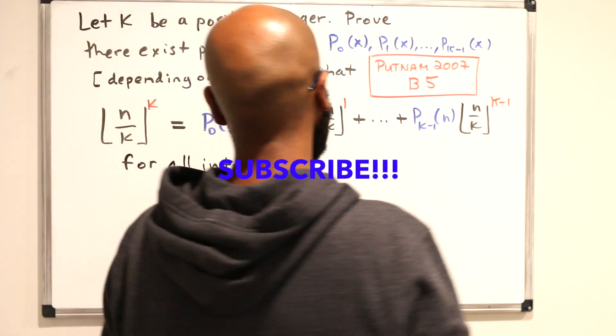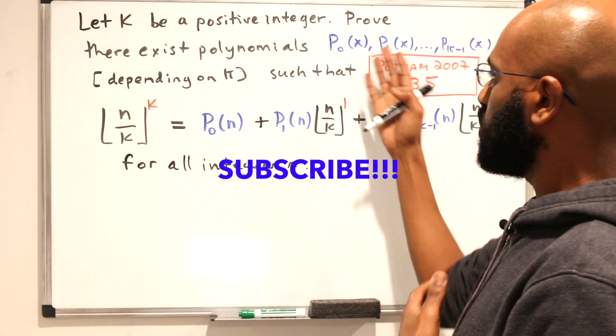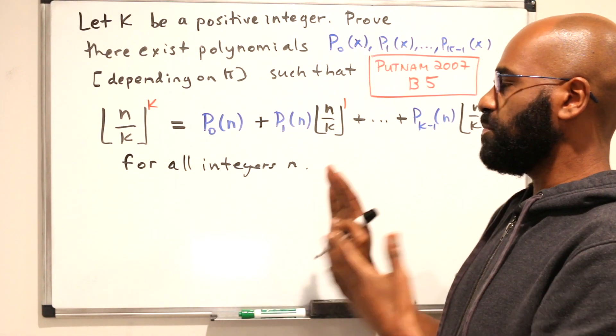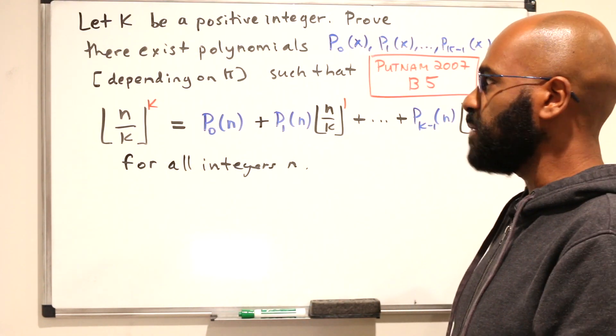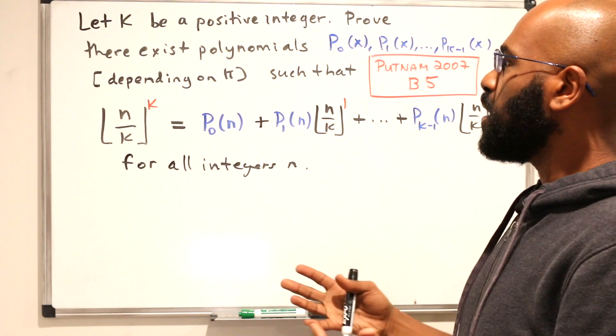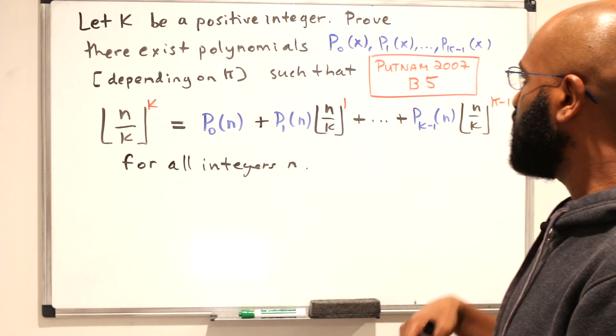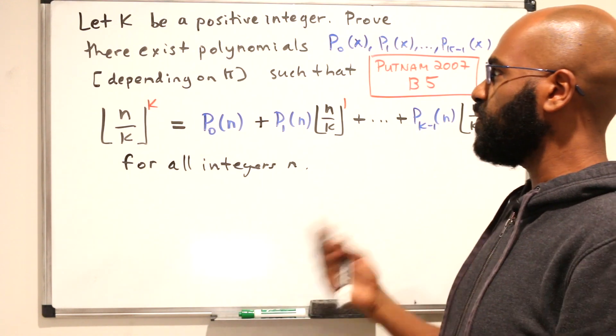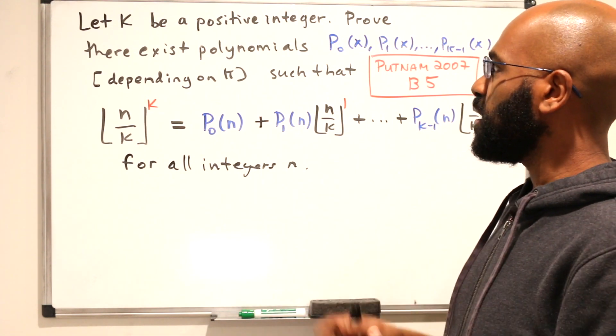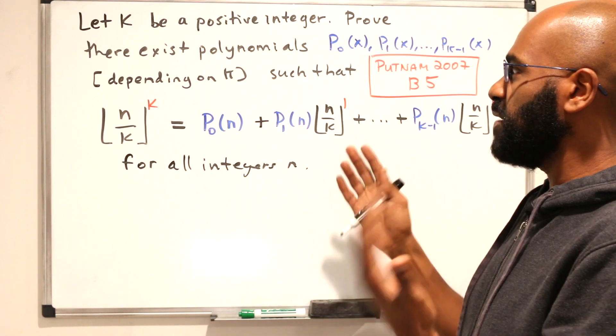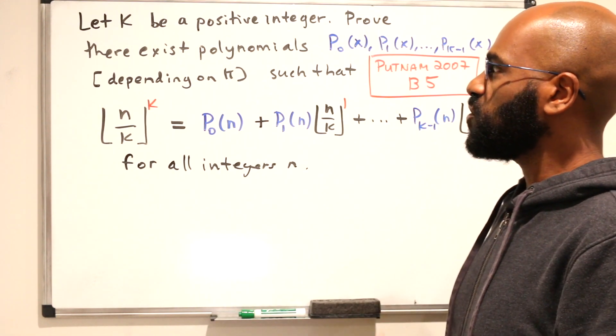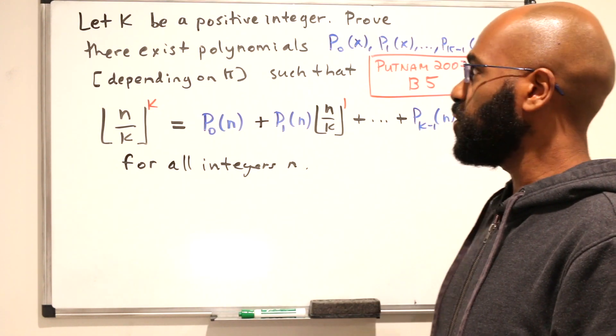It has to be true for every single n, even though these polynomials don't change depending on n, they only depend on k explicitly. So lots going on. And like I typically like to do with Putnam problems, anytime you have these general numbers and coefficients or general things that don't depend on like prime divisibility or anything like that, start with some small numbers and see what you can do.